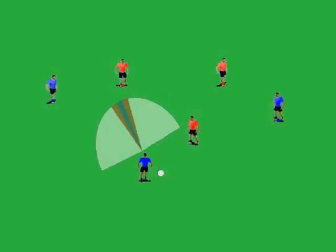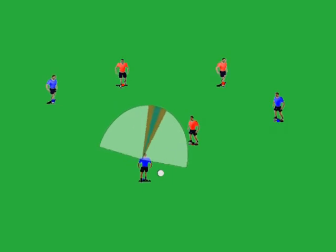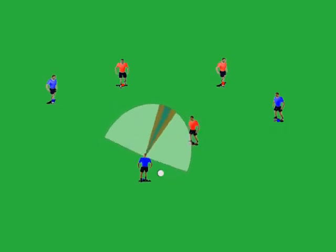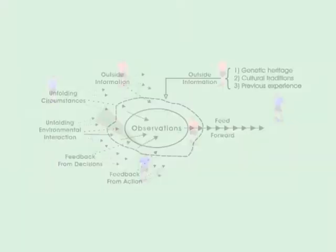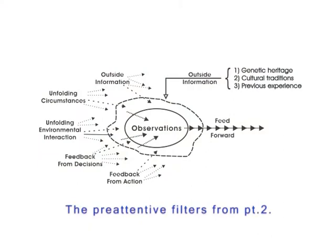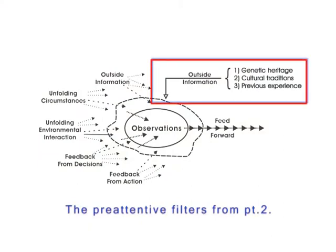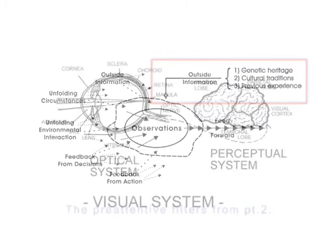Peripheral vision surrounds foveal vision and provides us with our global view of the scene. Our foveal and peripheral vision combine as the main hardware components of our visual data gathering system. But hardware needs software to work. In the OODA loop, we can find three components in orientation that fill this role.